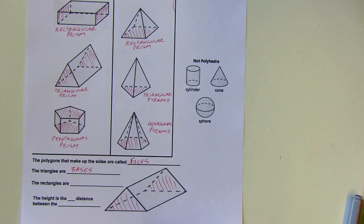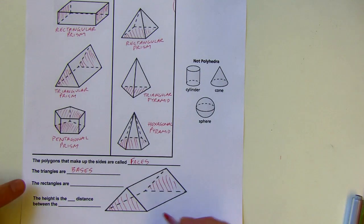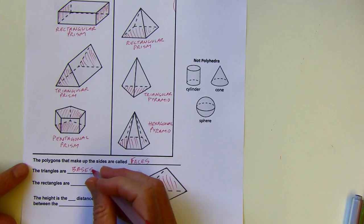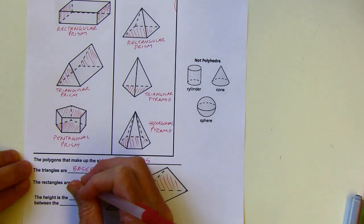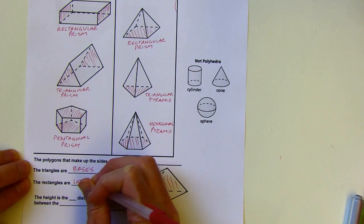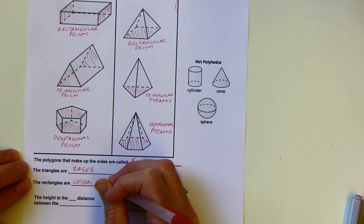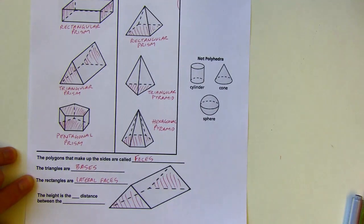And then the rectangles are going to be the lateral faces. So they're kind of like the sides. The sides that aren't bases are called lateral faces. Polygons that make up the sides.